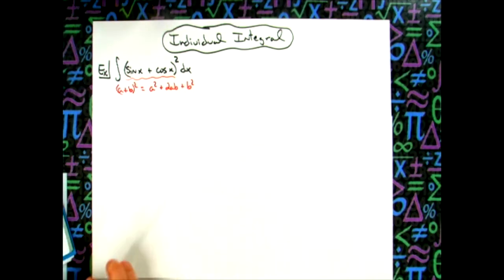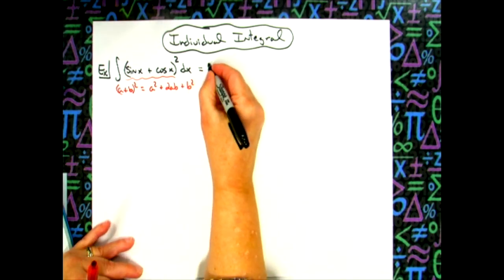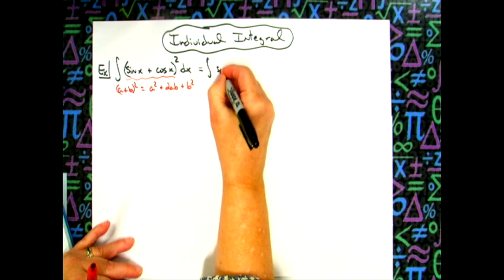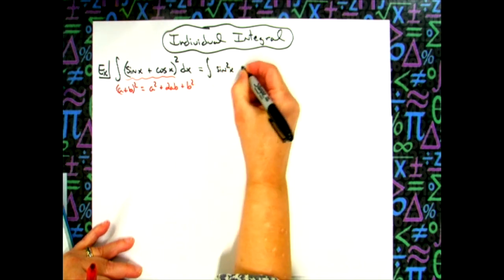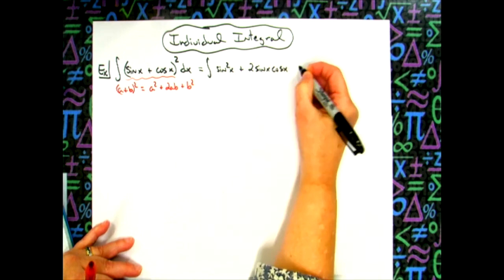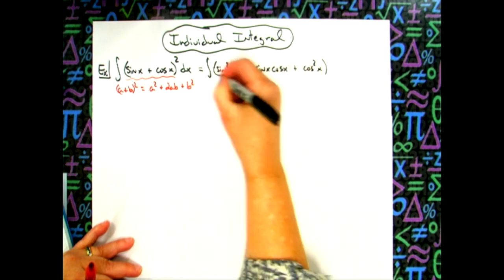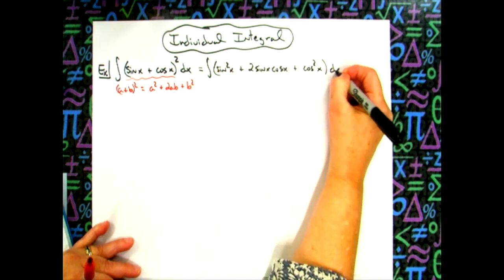You'll get the exact same result if I take that binomial and foil it out. So a little bit of algebra here. We'll have sine squared x plus two sine x cosine x and then plus cosine squared x. We'll go ahead and put that all in a set of parentheses there, dx.